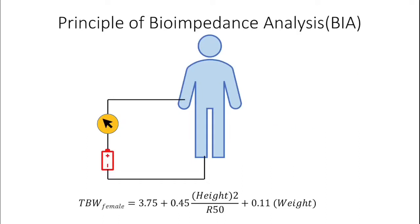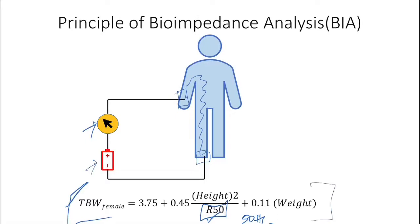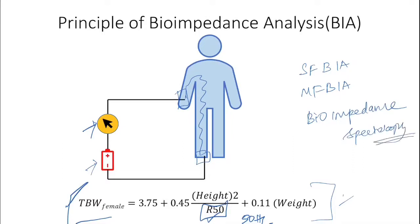Bio-impedance analysis is a non-invasive procedure. A known quantity of current is injected at two different points in the body, and the current flow across the body is measured — effectively measuring resistance or impedance. R50 refers to measurement at 50 Hz. A prediction formula is then used to calculate body fluid volumes. Methods include single-frequency bio-impedance analysis, multi-frequency bio-impedance analysis, and bio-impedance spectroscopy. This is clinically preferred because it is non-invasive and simple to use.